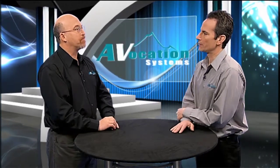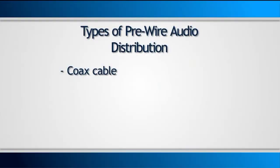Dealers are pulling different types of wire to accomplish audio distribution. First, there's good old-fashioned coax cable. It may already exist in the location that it's being used. It has a single use, though — you cannot use it for multiple channels. And it's very difficult for it to fail.